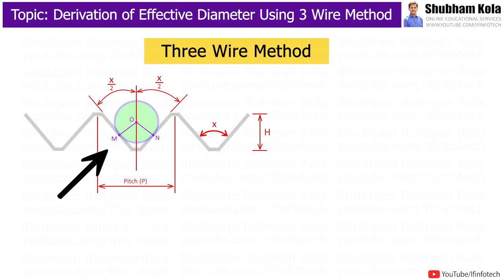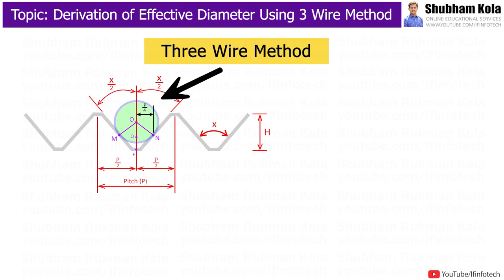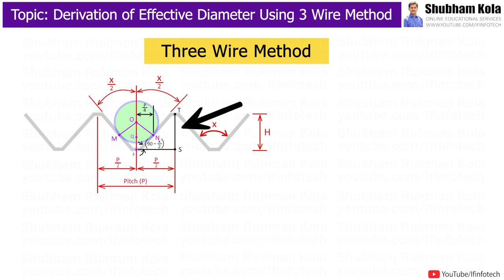We join the center point of the wire with tangent points. At the center, the pitch is divided into two parts, so this distance is half of pitch. If you consider the point at the effective diameter, then this distance would be pitch by 4, i.e. P/4. If this angle is half of thread angle, that is x/2, then this angle would be 90 minus x/2.